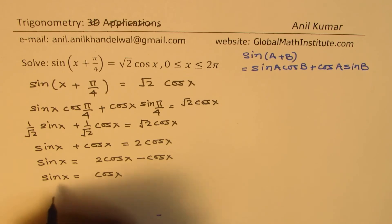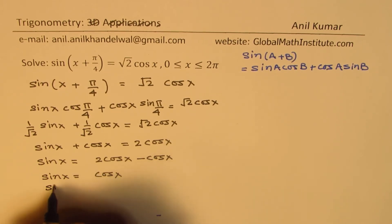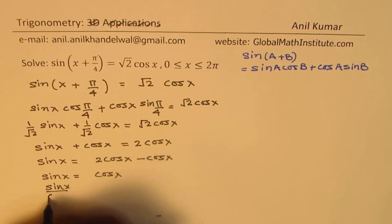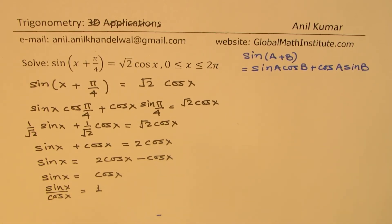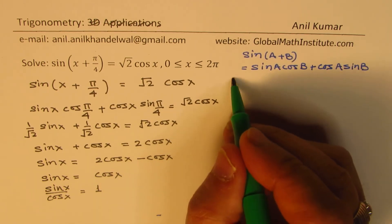Dividing by cos x, we get sin x / cos x = 1. Now we can easily find the solution. Let's write it down on the right side.